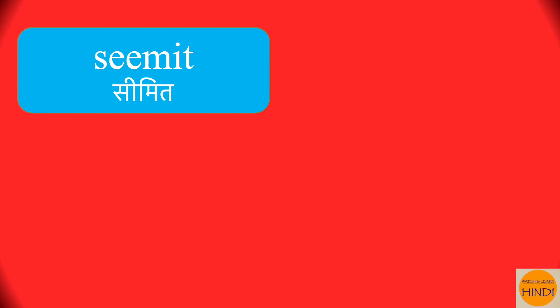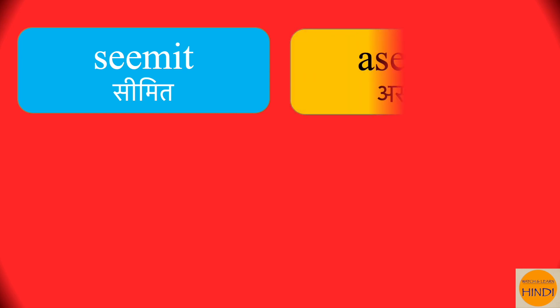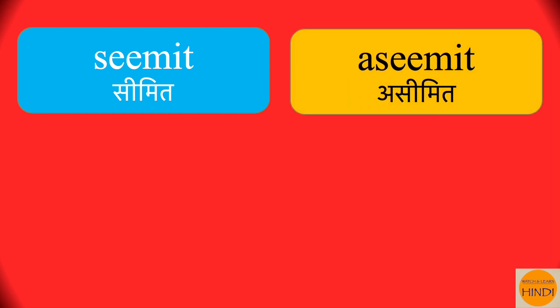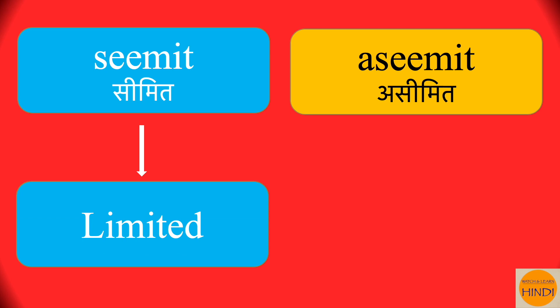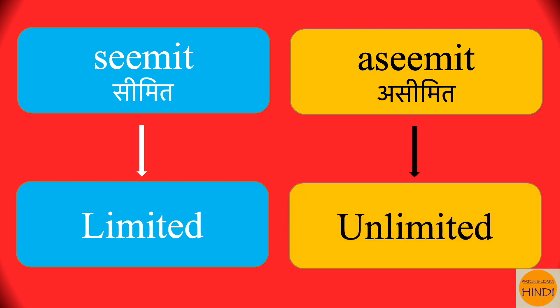Next is seemith. Again, you add 'A' in the front and you get aseemith. Seemith is limited, so aseemith is unlimited.